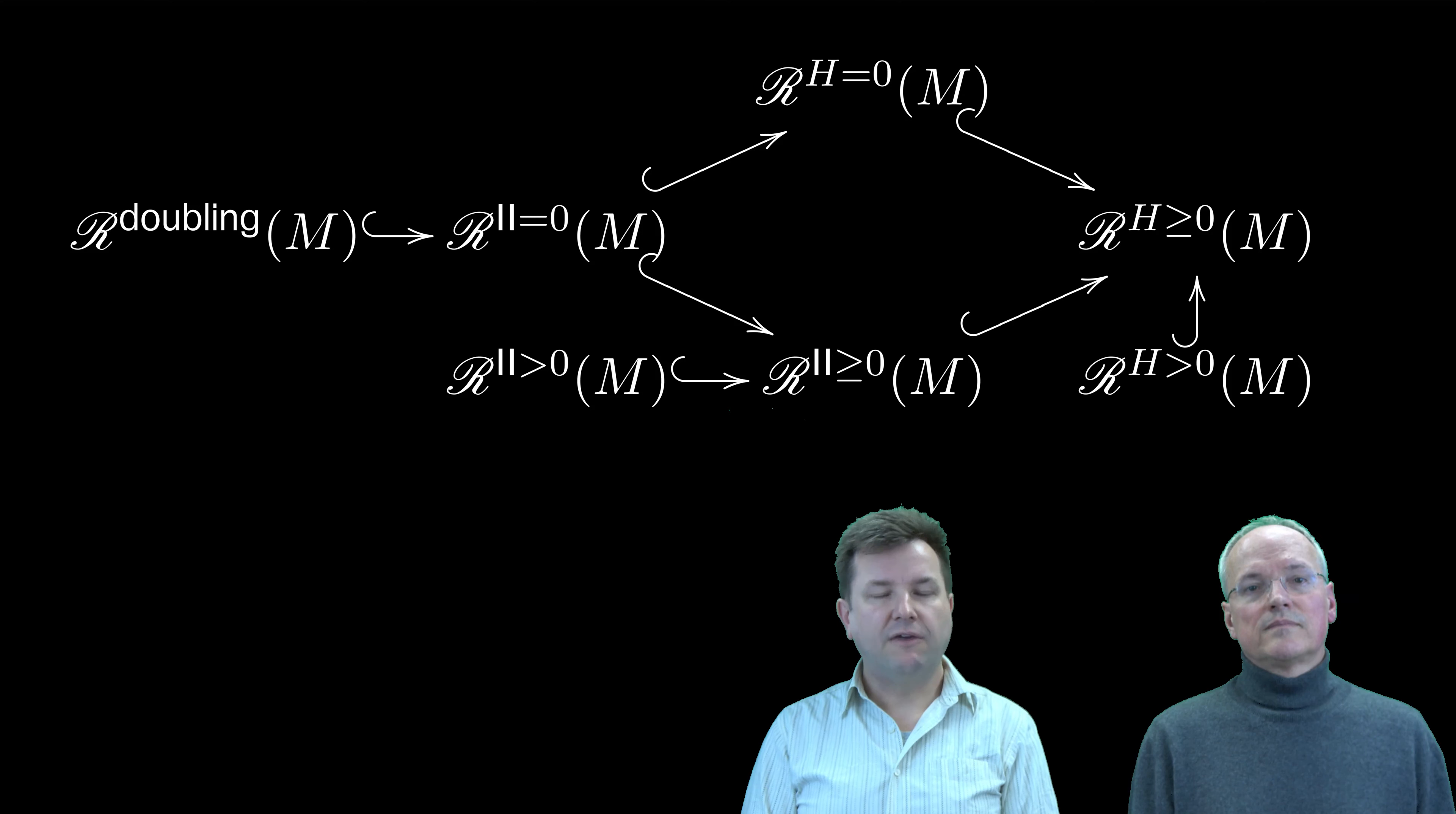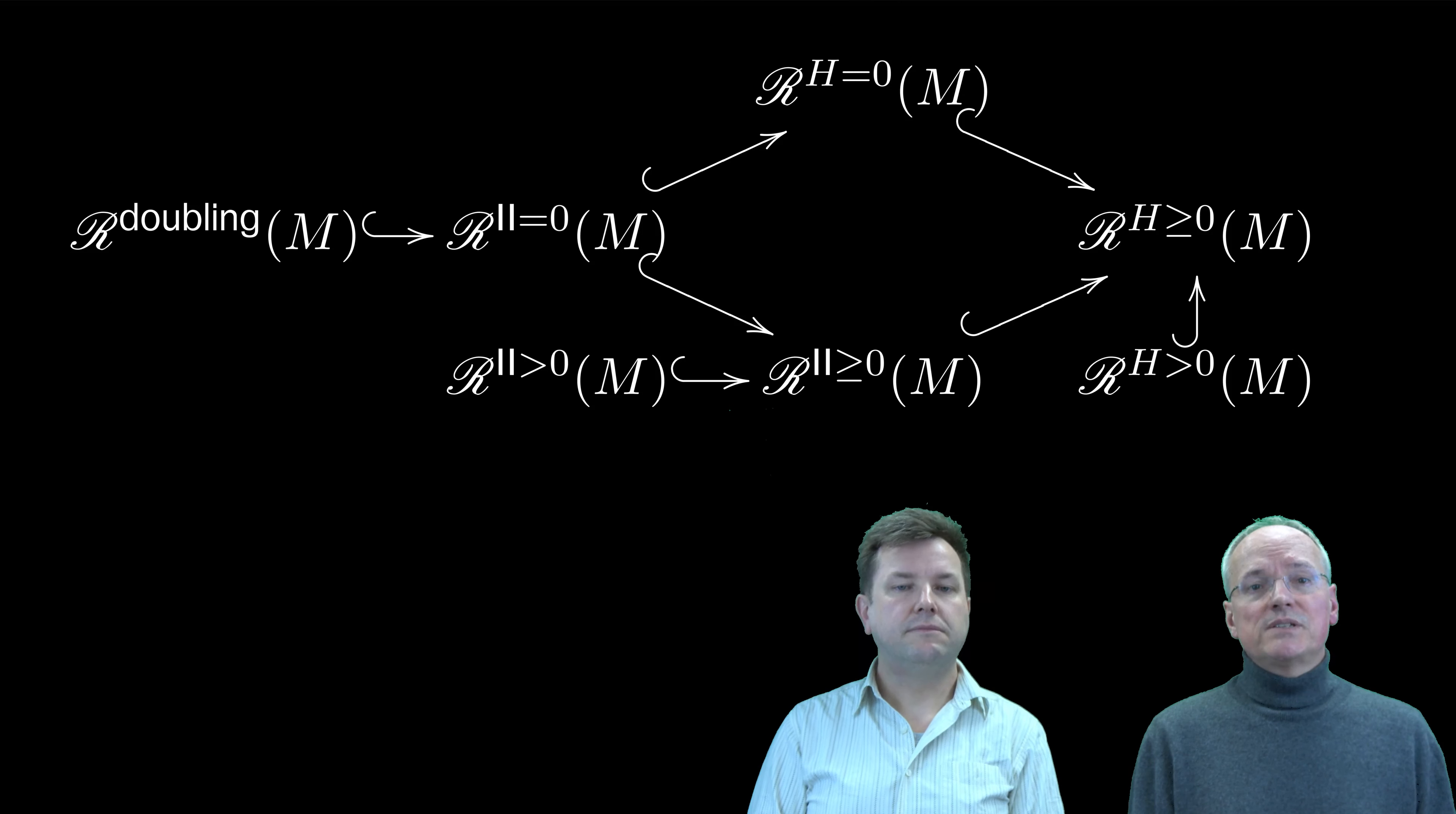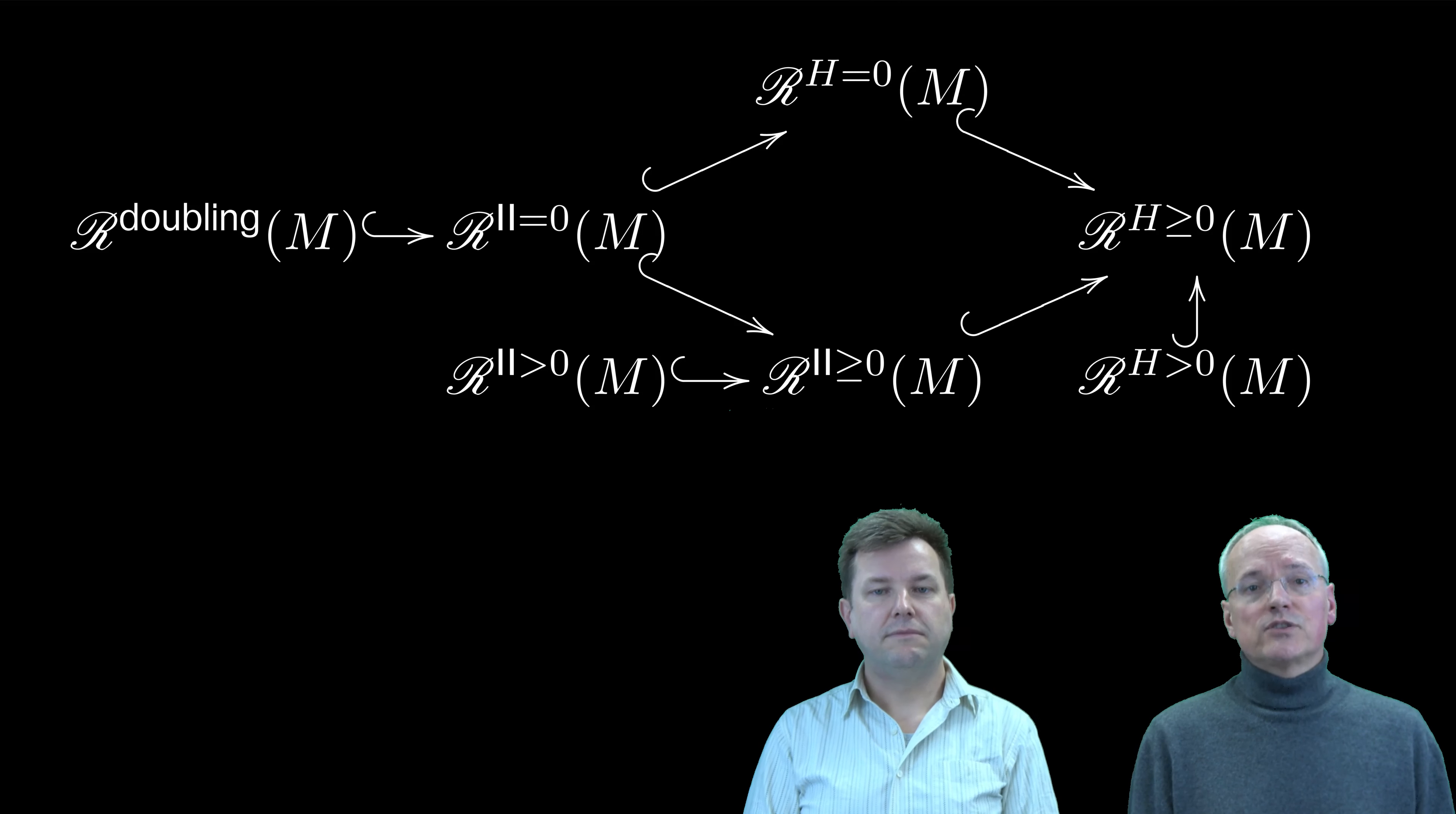In particular, if one of these spaces is empty, then all of them are empty. But much more is true. For instance, if there exists a PSC metric such that the boundary has non-negative mean curvature, then this metric can be deformed through such metrics into a doubling PSC metric.